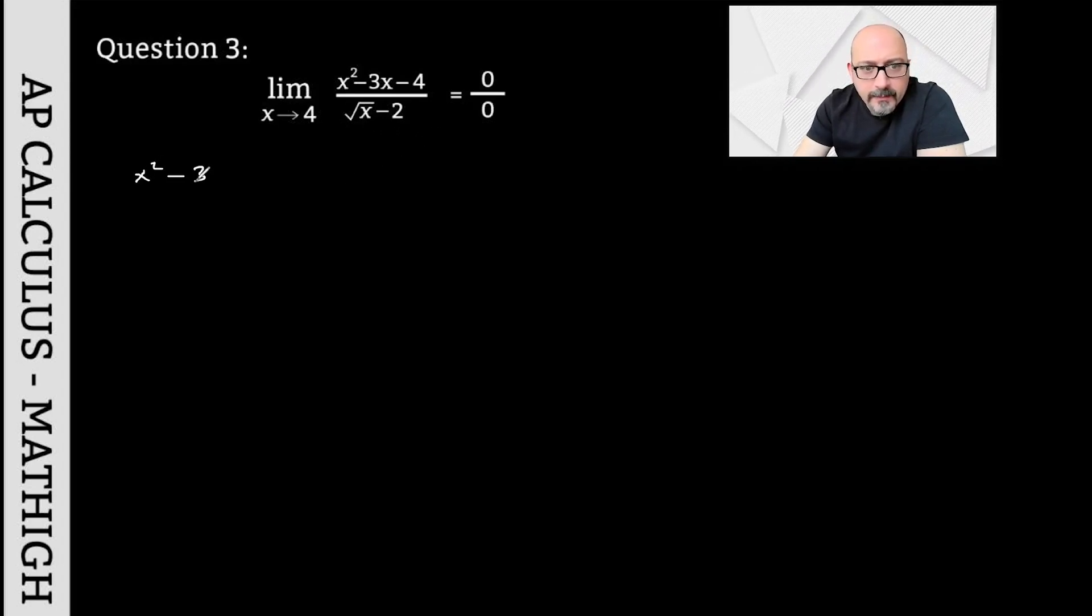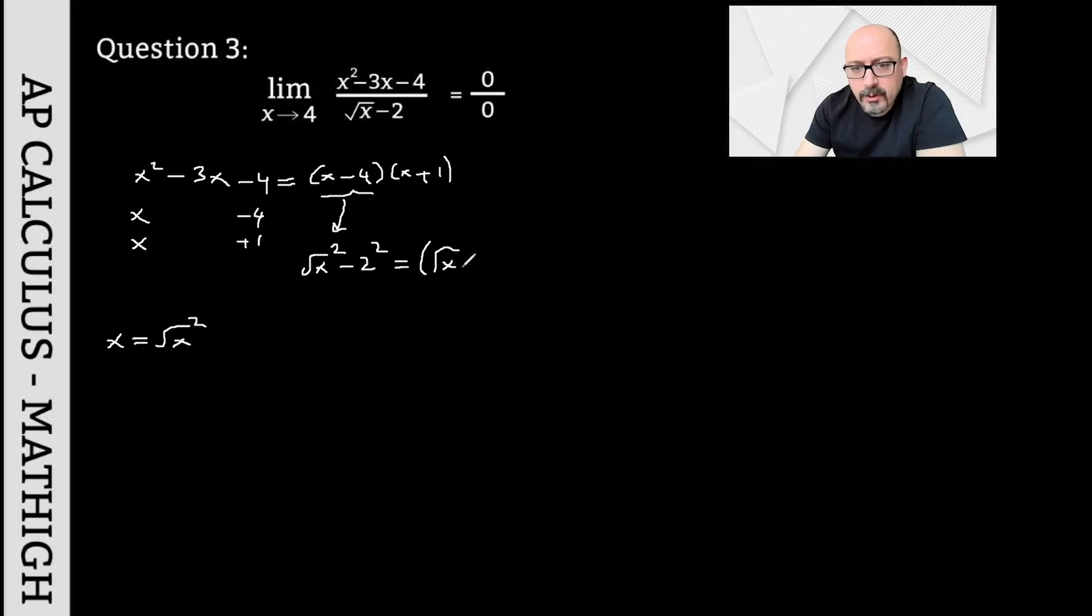Now let's start factoring. x squared minus 3x minus 4 factors as x and x, and negative 4 and positive 1. We find that the expression is (x-4) times (x+1). But that's not enough because there is square root of x minus 2 in the denominator. You need to think: x is actually the square of the square root of x. With this information, I can write x minus 4 as the square of the square root of x minus the square of 2. Since we created a difference of squares here, we can factor this as (√x - 2) times (√x + 2).